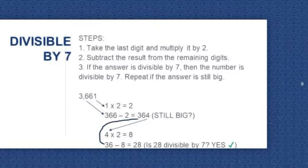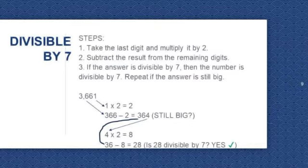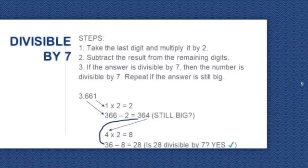Let's try another example: 3,661. The last digit is 1. 1 times 2 is equal to 2. Subtract 2 from the remaining digits, which are 366. 366 minus 2 is equal to 364. 364 is still big, so let's repeat the steps. Take the last digit, which is 4, and multiply it by 2. 4 times 2 is equal to 8. Subtract 8 from the remaining digits, which are 36. 36 minus 8 is equal to 28. Is 28 divisible by 7? Yes. So 3,661 is divisible by 7.